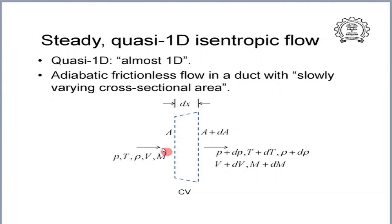The flow comes into the control volume at speed V with Mach number M, and the conditions are p, T, and rho. Through the distance dx, all these change by infinitesimally small amounts dp, dT, and so on. We describe this as an adiabatic and frictionless flow. By frictionless, we mean we are ignoring viscosity altogether and treating this as an inviscid flow.